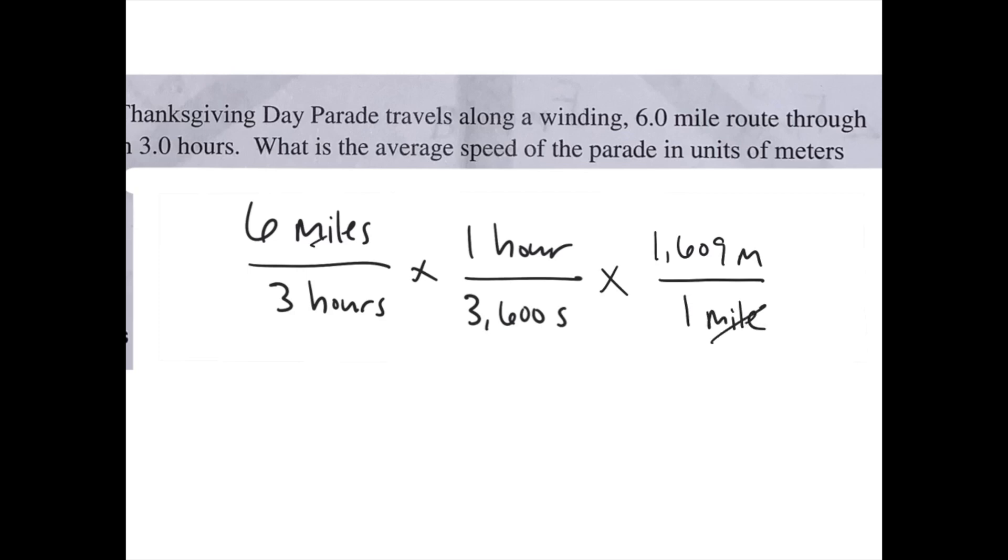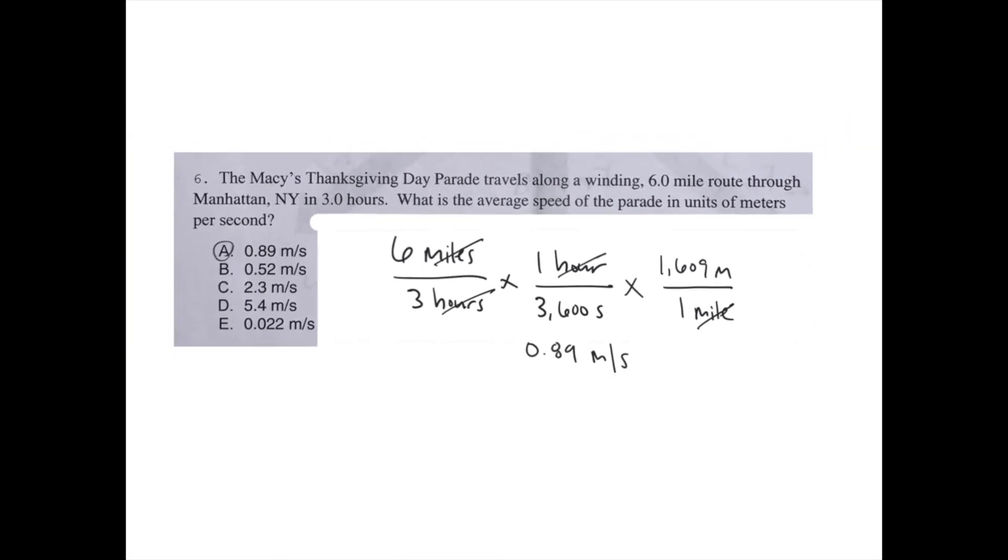you can cancel units in order to get 0.89 meters per second, which is the average speed of the parade in units of meters per second.